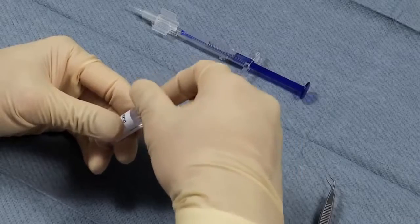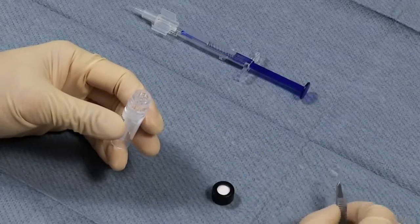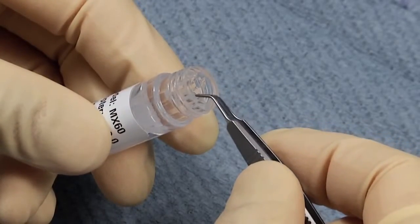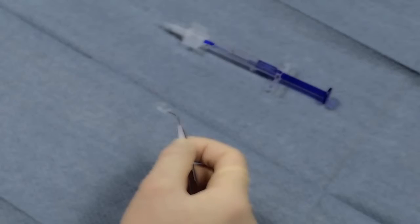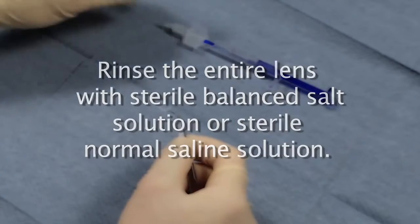Open the vial containing the IOL and using non-serrated forceps, remove the lens by grasping and carefully pulling it out vertically from the center slot at the top portion of the vial. Rinse the entire lens with sterile balanced salt solution or sterile normal saline solution.